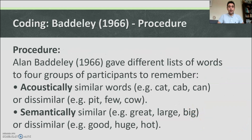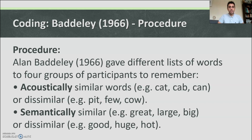Procedure: Alan Baddeley in 1966 gave different lists of words to four groups of participants to remember. These were: acoustically similar words (e.g. cat, cab, can), acoustically dissimilar words (e.g. pit, few, cow), semantically similar words (e.g. great, large, big), or semantically dissimilar words (e.g. huge, good, hot).